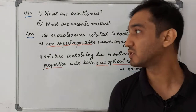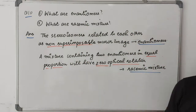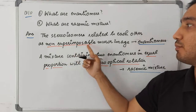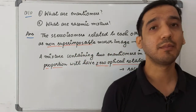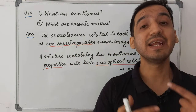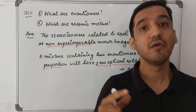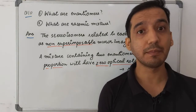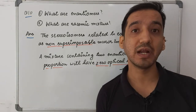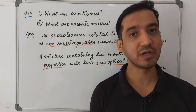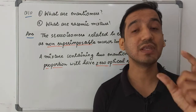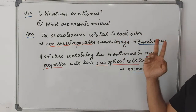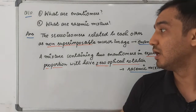Question ten: what are enantiomers? Enantiomers are stereoisomers related to each other as non-superimposable mirror images. If a compound is optically active, its non-superimposable mirror image forms its enantiomer. One will rotate plane-polarized light to the left (levorotatory) and the other to the right (dextrorotatory) — these two compounds together are called enantiomers.